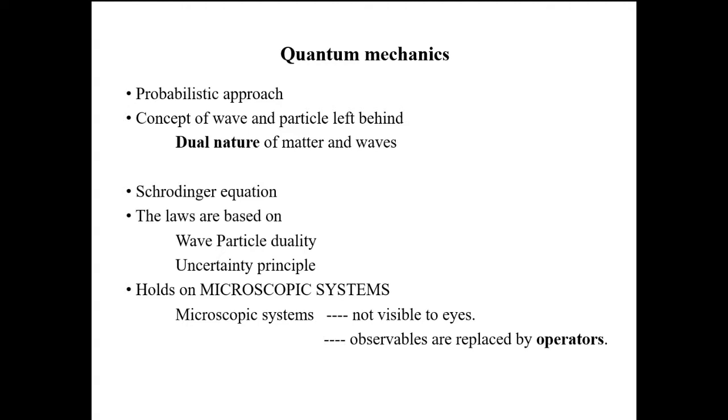The laws in quantum mechanics are based on various principles like wave-particle duality and uncertainty principle. And it holds good in microscopic systems that are the systems which are invisible to our eyes. The observables in classical mechanics are replaced by operators in quantum mechanics.